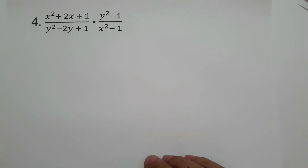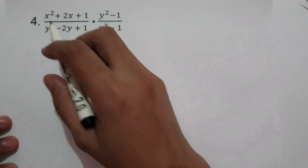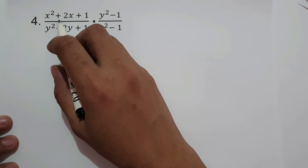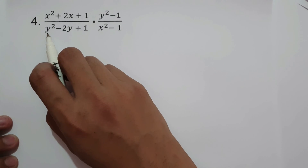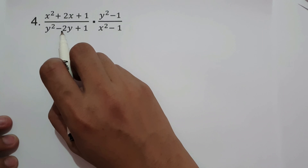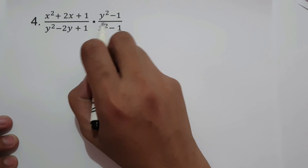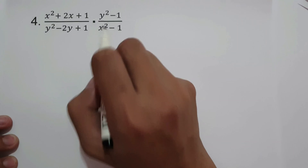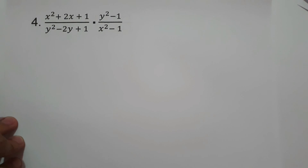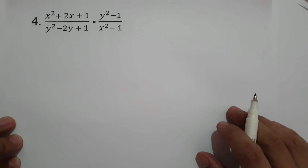For number 4, we have (x² + 2x + 1)/(y² − 2y + 1) times (y² − 1)/(x² − 1). Before multiplying, let's find the factors of the numerator and denominator.